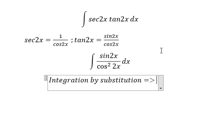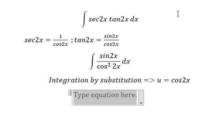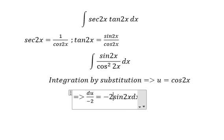So we let u equal cos 2x. Then du equals negative 2 sin 2x dx. Since we don't have the negative 2, we divide both sides by negative 2.